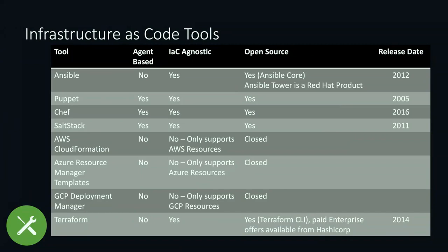And then the last one is Terraform. This one is a little different in that it is again cloud or infrastructure-agnostic. It's not technically agent-based — it runs from a specific location to connect to the resources. But I think this one is really more focused around infrastructure provisioning, whereas the others — especially Ansible and Puppet — are really more around the configuration management side.